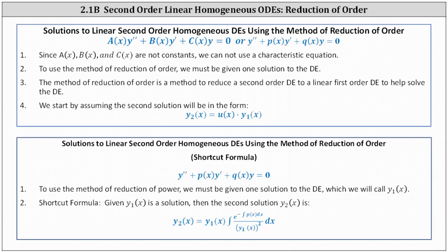To use the method of reduction of order, we must be given one solution to the differential equation, which we were given. The method reduces a second order differential equation to a linear first order differential equation to help solve the given equation. We start by assuming the second solution will be in the form y2(x) = u(x)·y1(x), where u(x) is some function of x and y1(x) is the given solution. As long as y1 and y2 are linearly independent, the general solution will be the linear combination of y1 and y2.